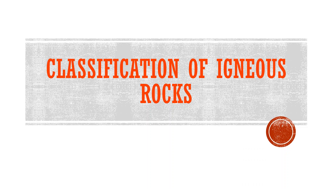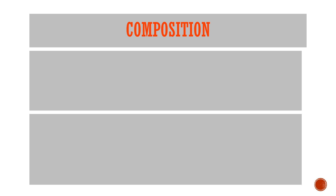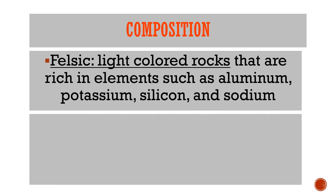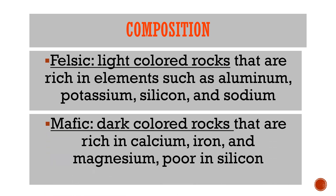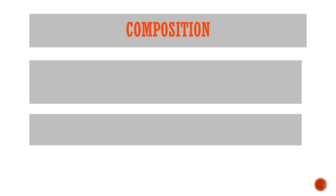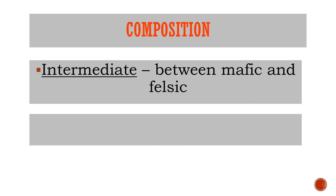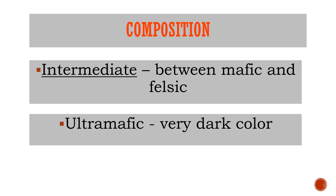Igneous rocks are classified by composition into four types. Felsic are light-colored rocks rich in elements such as aluminum, potassium, silicon, and sodium. Mafic are dark-colored rocks rich in calcium, iron, and magnesium and lower in silicon. Intermediate falls between mafic and felsic. Ultramafic rocks are very dark in color.